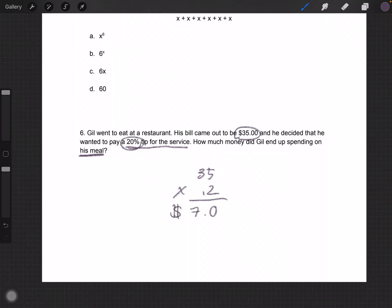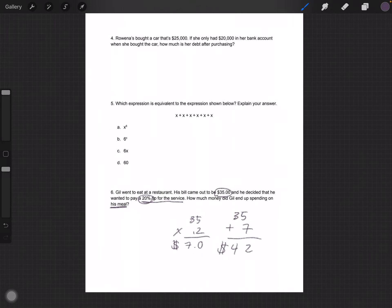$7 is how much he's paying for the service. It is his tip. But he's not only paying $7 because his bill for his food is $35. So $35 plus the $7 gives $42. He's paying $42 in total.